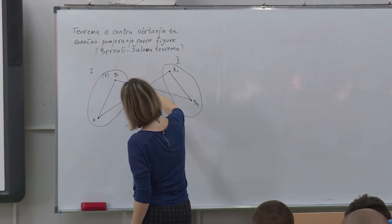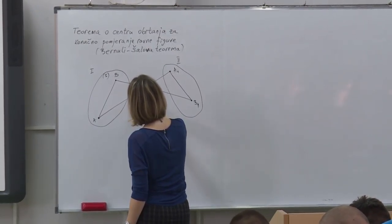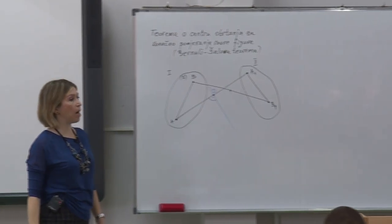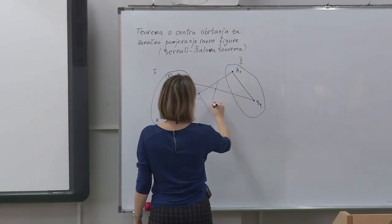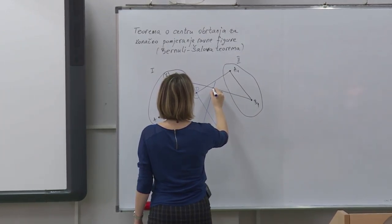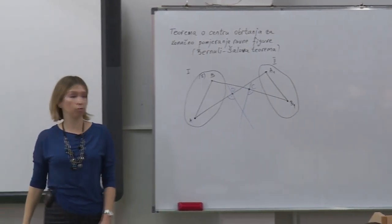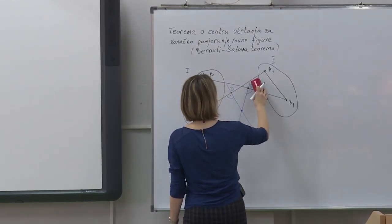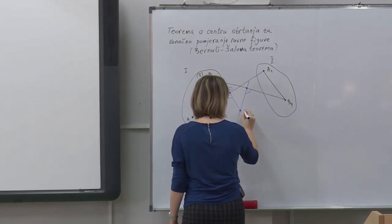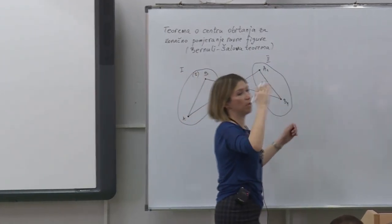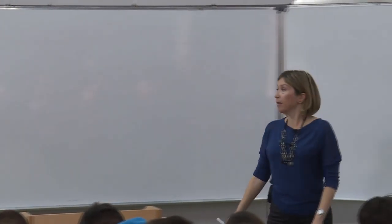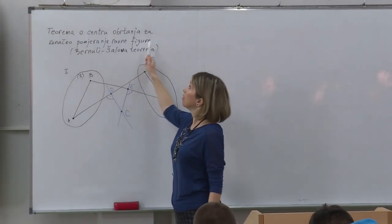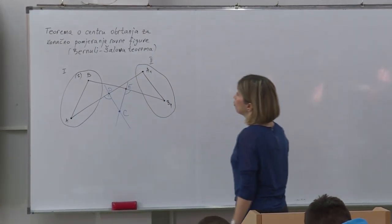Normala na duž AA1 je ovaj pravac — neka je D centar duži AA1. I normala na drugu duž BB1 povučena kroz središte duži — neka tu bude tačka E. Neka tačka sjecišta ove dvije normale bude tačka C. Evo kako smo odredili gdje se nalazi tačka C koja predstavlja centar obrtanja ove naše ravne figure za konačno pomjeranje.